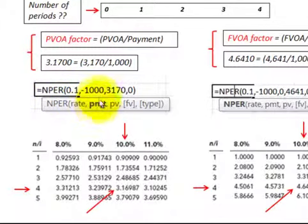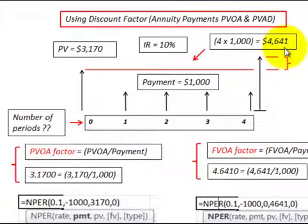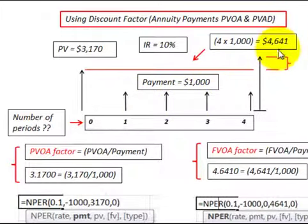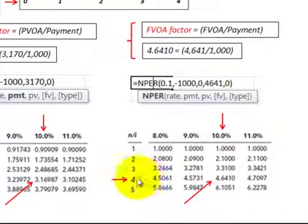The same can be done with the Excel NPER function: enter the interest rate, the payment amount, and either the present value or future value. For a future value example, if we want to know how many $1,000 payments are needed to accumulate $4,641, we determine the future value ordinary annuity factor, go to the corresponding table at 10%, find that factor, move across — again four periods.